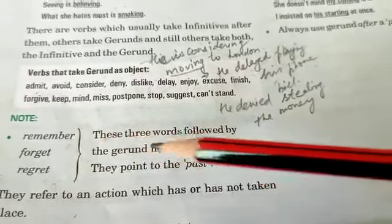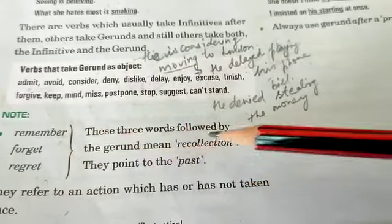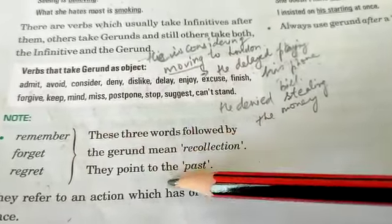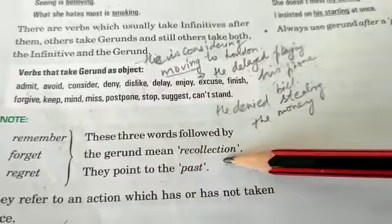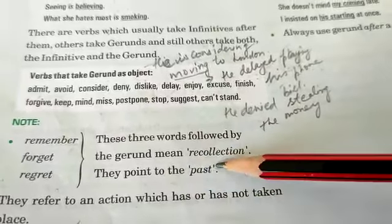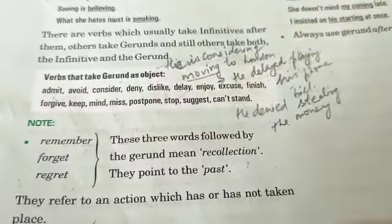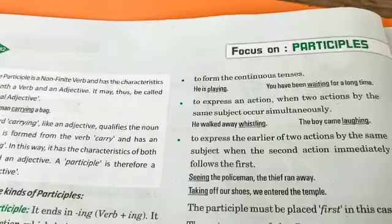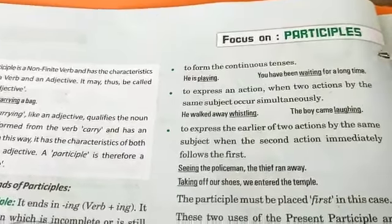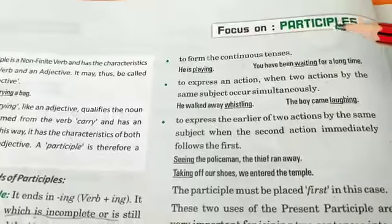Three words — remember, forget, and regret — when followed by the gerund, mean recollection; they point to the past.